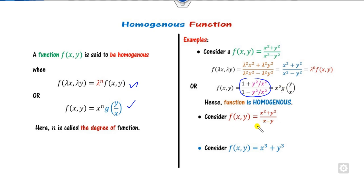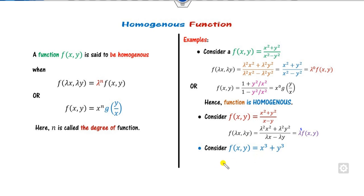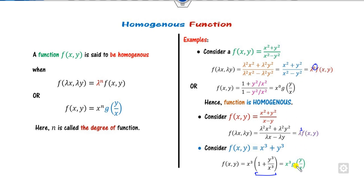For the next example, f(lambda x, lambda y) gives lambda raised to power 1, so the degree of the function is 1. If you divide both sides by x cubed, you get x raised to power n where n=3, and g(y/x). In these three examples, all are homogeneous functions, but with degrees 0, 1, and 3 respectively.